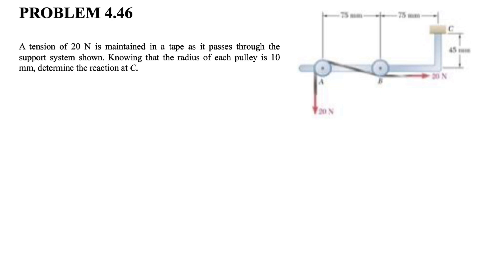In this problem, we know that a tension of 20 N is maintained in a tape as it passes through a support system. We know that the radius of each pulley is 10 millimeters, and we need to determine the reaction at point C. So we have two forces of 20 Newton, one 20 Newton here and one 20 Newton here.